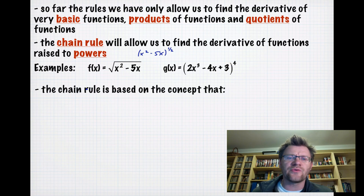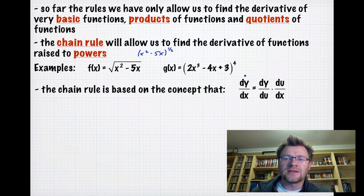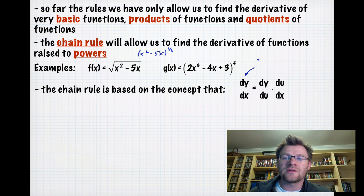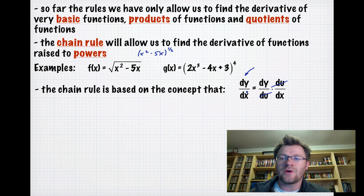The Chain Rule is based on the concept that dy/dx — the derivative of your function y in terms of x — is equal to dy/du times du/dx. You can think of this as the du terms cancelling out, so we still get dy/dx.